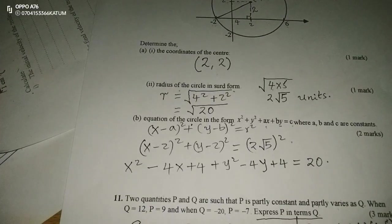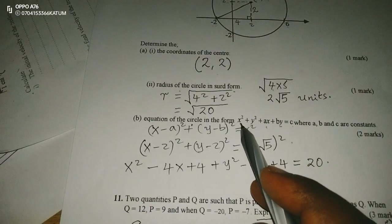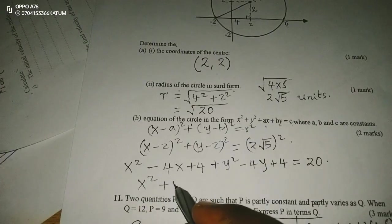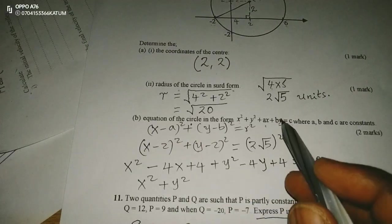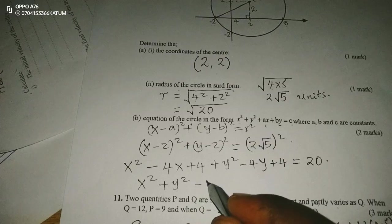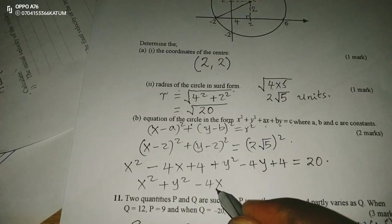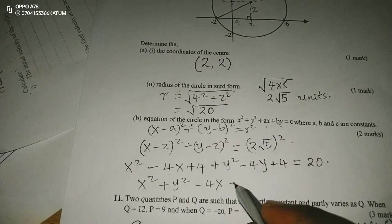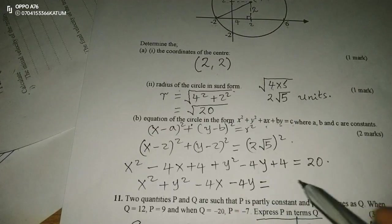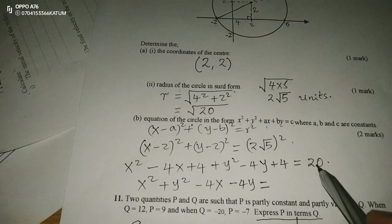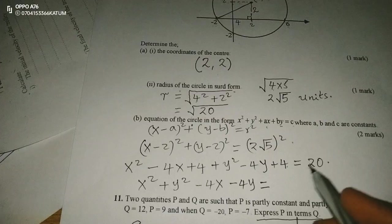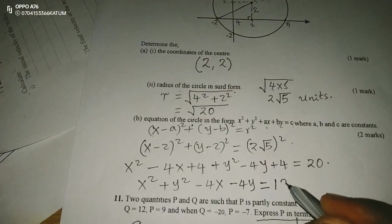Therefore, now we can arrange the equation to the desired format. We start with x² + y² - 4x - 4y equals to... We group the constants. So this is 4 and 4, giving us 8. We'll subtract 8 from this side, and this will give us 12.